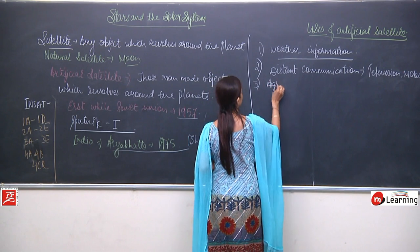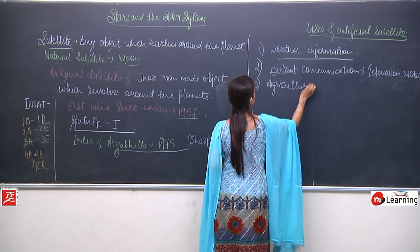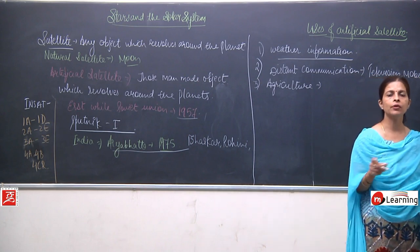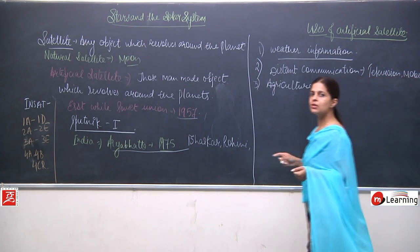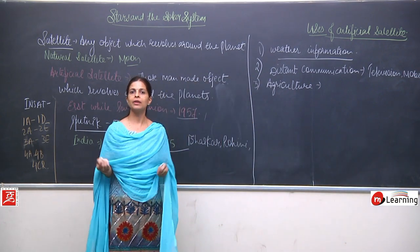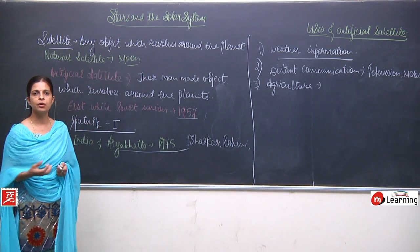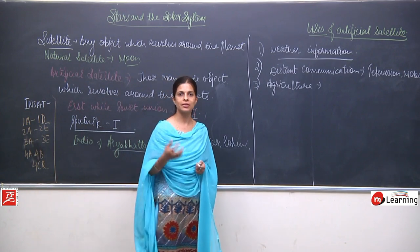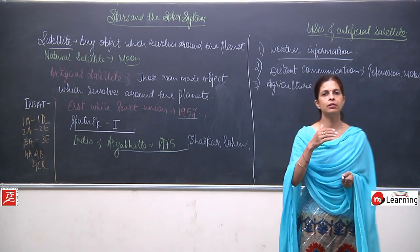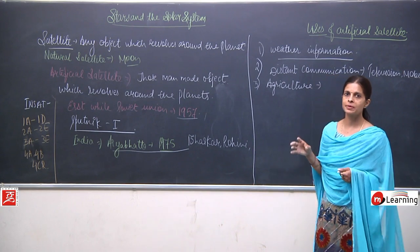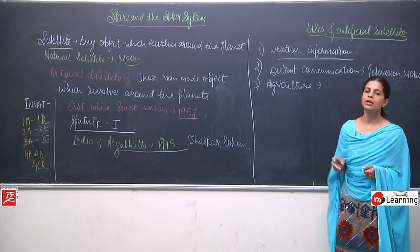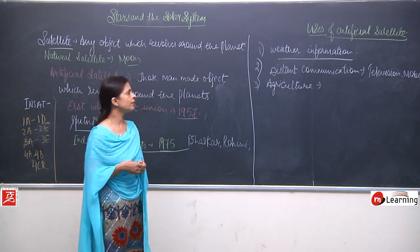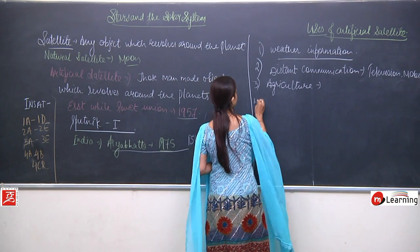The third use is in agriculture. Weather forecasting itself is related to agriculture, helping farmers understand upcoming rainfall and other conditions. Apart from this, long-term observation and study of crops can also be done with the help of artificial satellites.